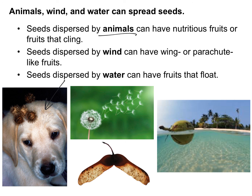Seeds can also be dispersed by wind, with parachute or wing-like fruits. The dandelion structures are considered the fruit and are specially adapted to fly through the air. Similarly, the helicopter seed from maple trees has wing-like structures that spin and take flight, getting far from the original parent. Seeds can also be dispersed by water — a coconut is a seed that's buoyant so it can float to different islands, and after about three to six months it'll start sprouting a plant.